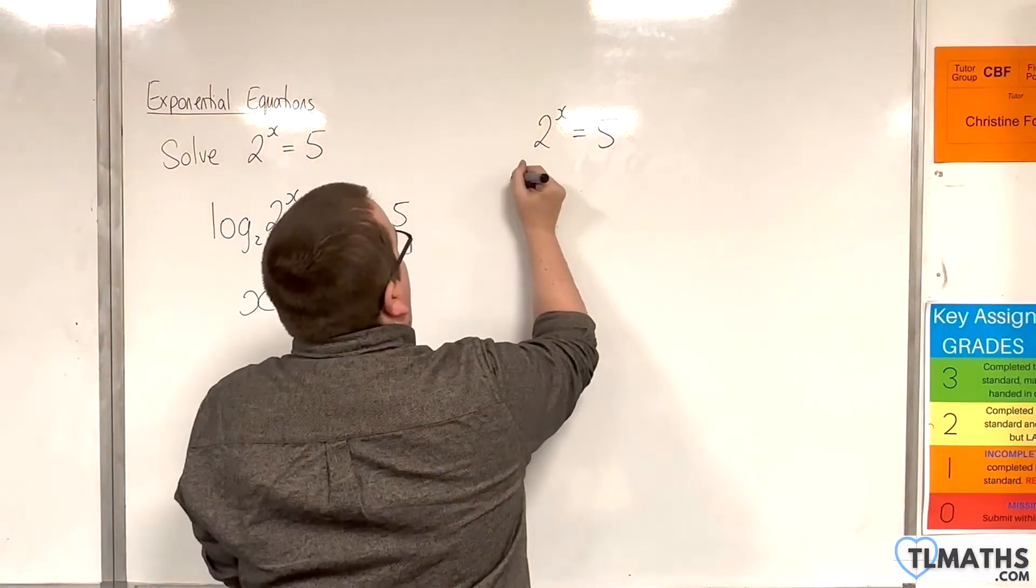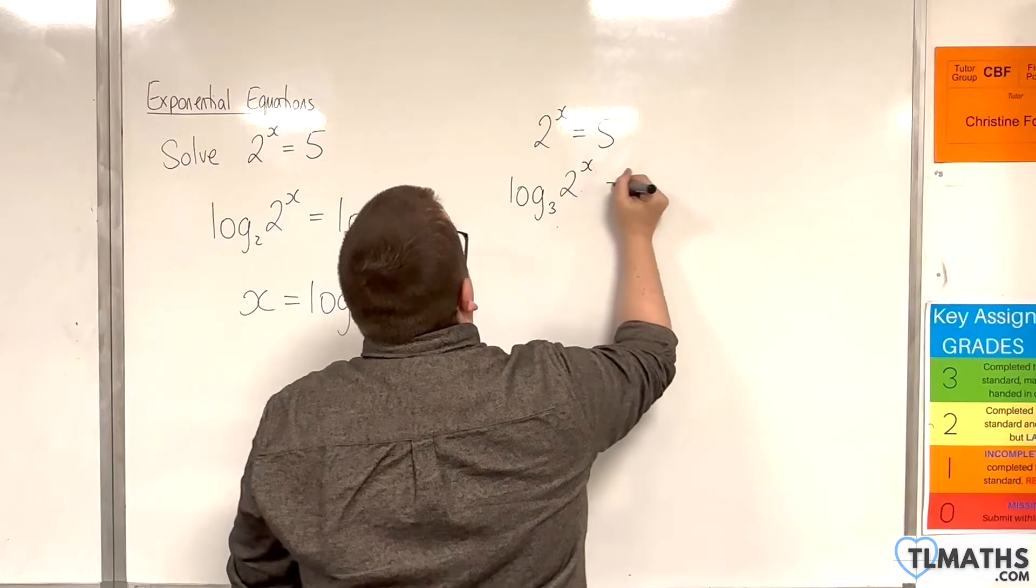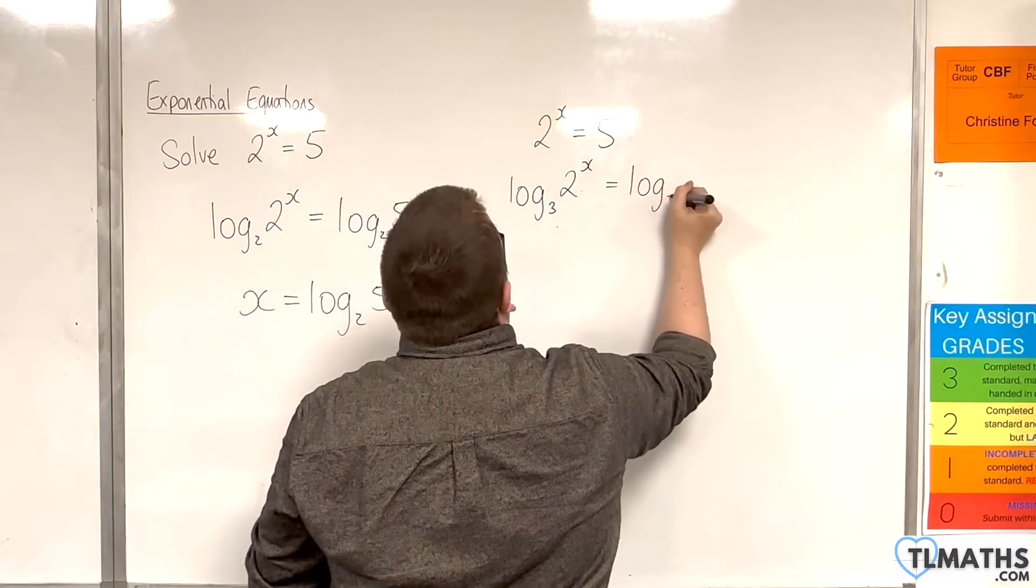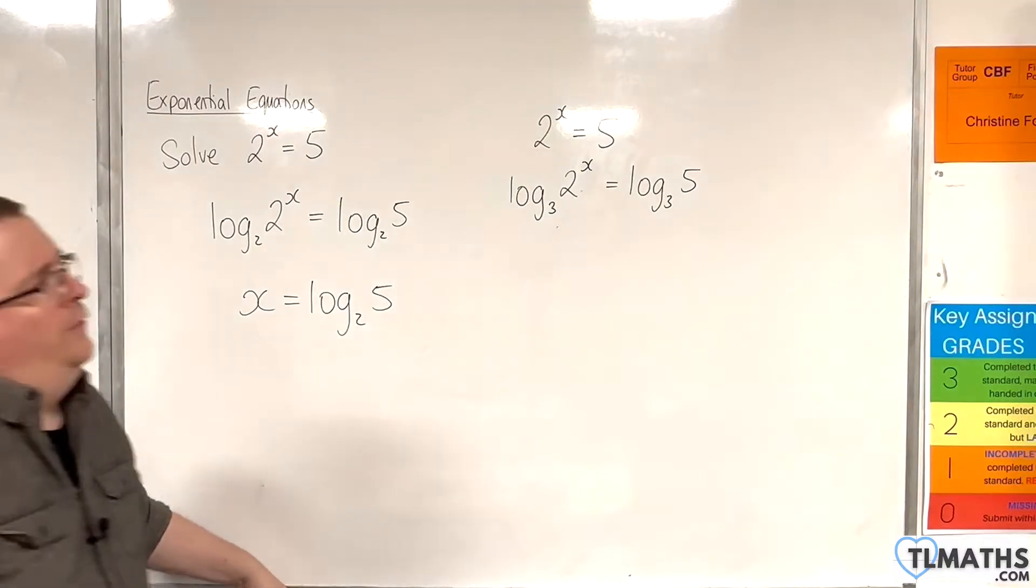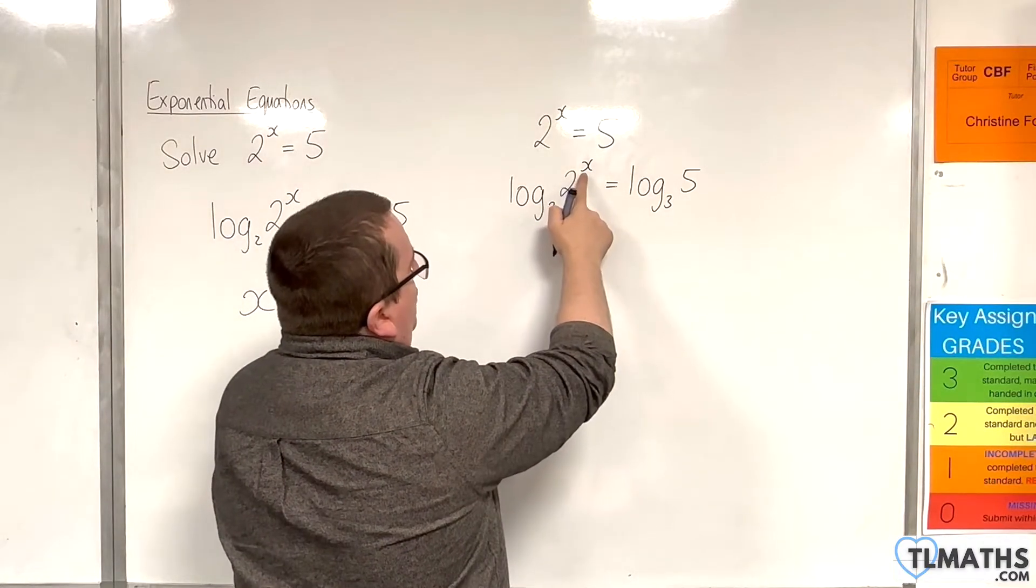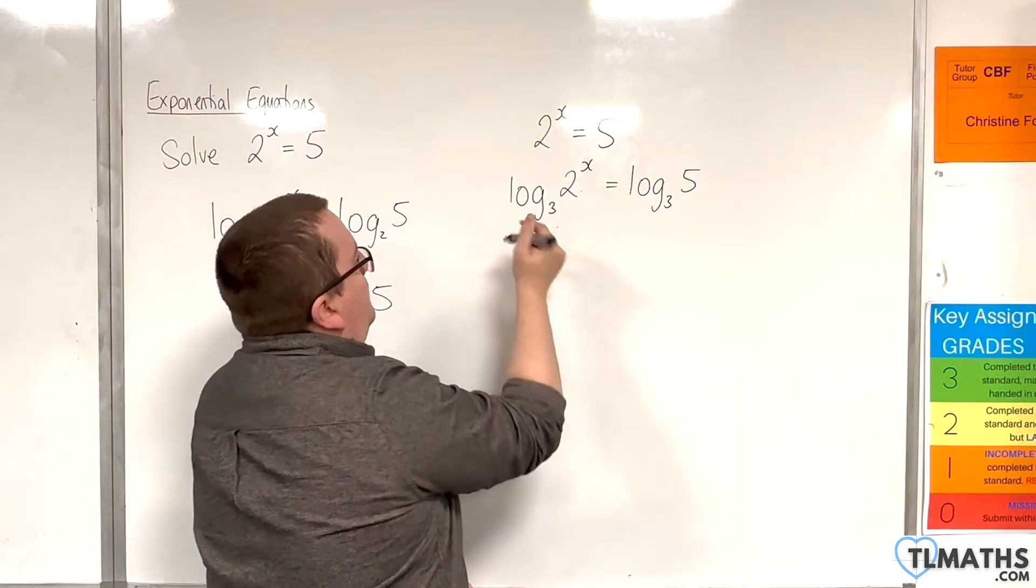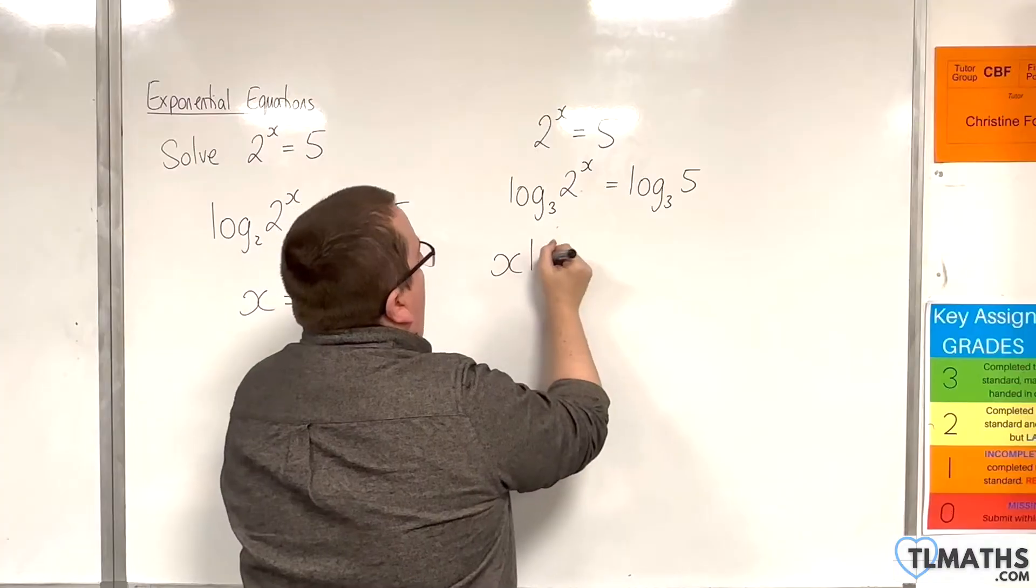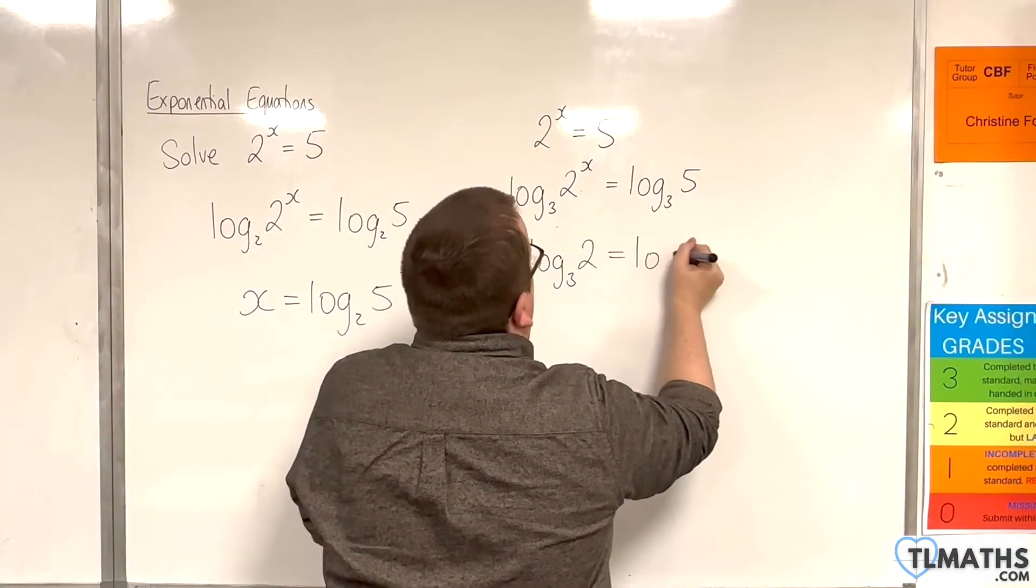So, if we did that, we would have log base 3 of 2 to the x is equal to log base 3 of 5. So, what we could do to solve this is we could use the power rule to bring the x down to the front. So, we could write that as x log base 3 of 2 is equal to log base 3 of 5.